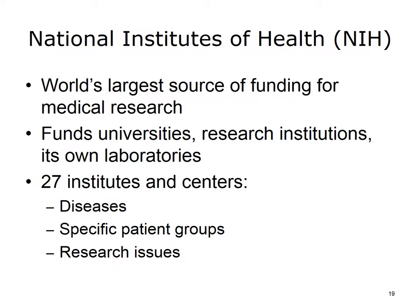The medical research arm of the HHS is the National Institutes of Health, or NIH. This is the largest source of medical research funding in the world, promoting scientific discoveries in every U.S. state and abroad. Research is conducted at universities or research centers, and at NIH laboratories on its own campus. The NIH is organized into 27 institutes and centers, many of which focus on diseases or body systems. Some well-known examples are the National Cancer Institute, the National Institute of Mental Health, and the National Institute of Diabetes and Digestive and Kidney Diseases. Other institutes focus on specific patient groups such as children and the elderly, for example through the National Institute on Aging.